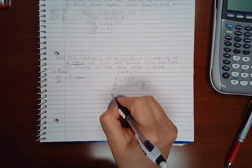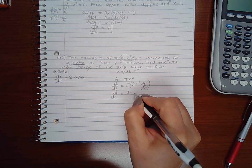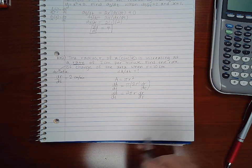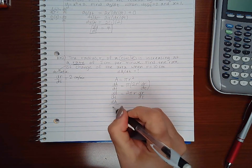Now if I clean it up, I get 2 pi r dr/dt, and we do have every bit of information that we need in order to find da/dt.